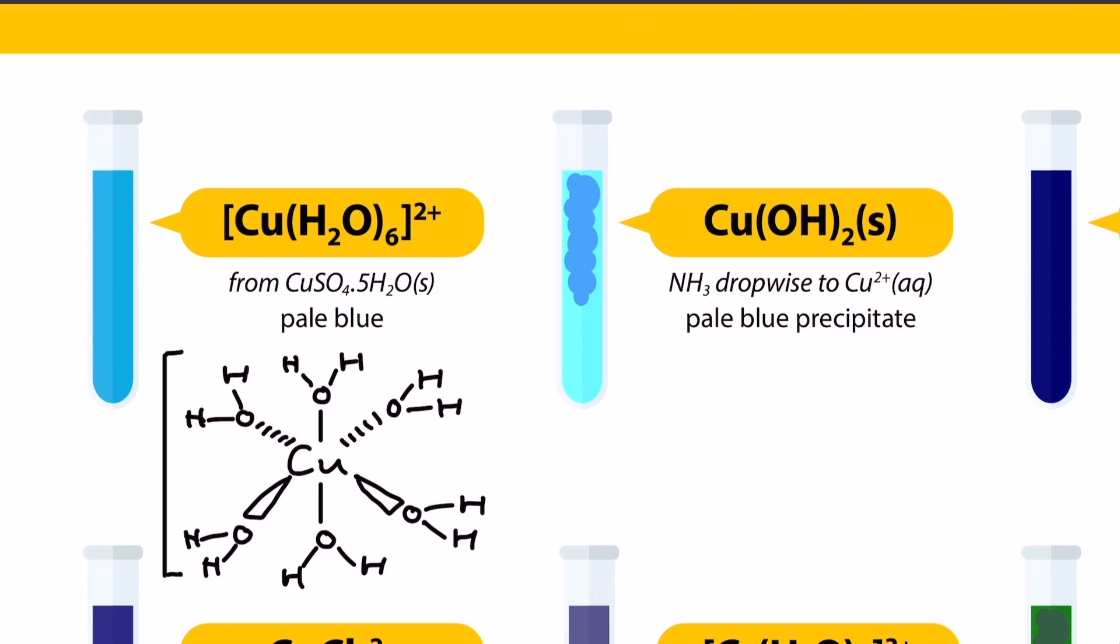First off on the sheet, we have the hexa-aqua copper-2 complex ion, which I've drawn here in the square brackets. It's octahedral, it has a copper-2 ion in the centre, and it's surrounded by six H2O ligands, all forming dative covalent bonds.